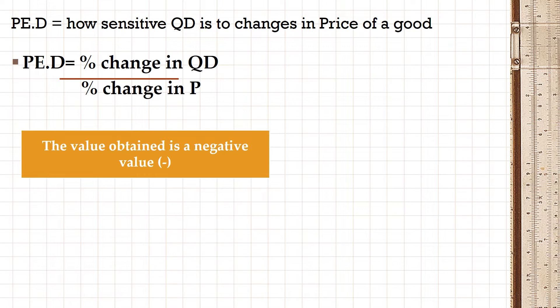It is important to remember that if the nature of a commodity is elastic, the demand curve would be flat. And if the commodity is inelastic, the shape of the demand curve would be steep.